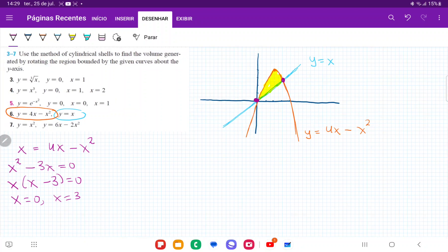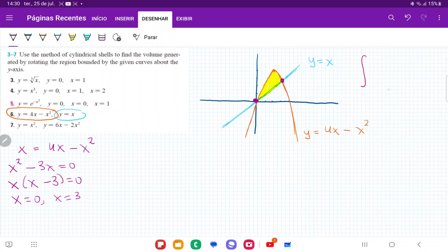So we can see here that our integral, our sum is going to be from 0, that's our first boundary here, all the way out to 3, which is our second boundary at that point.